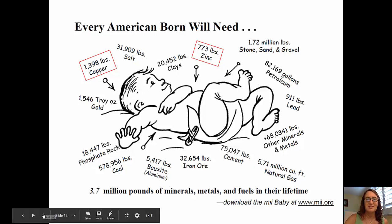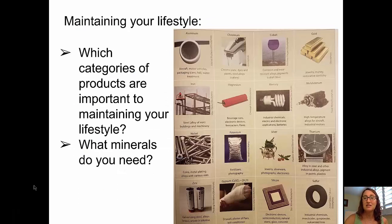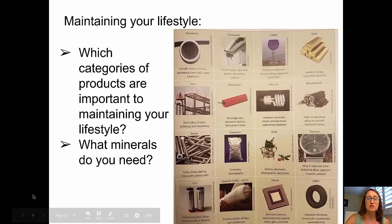What are we doing with all these things? We're using them to maintain our lifestyles. In this picture, you can see some of the different major ores that are mined: aluminum, chromium, mercury, silver, gypsum, and others. Pause and think about which of these categories are important to you to maintain your lifestyle — which minerals do you need, and which minerals make up the products that you demand?